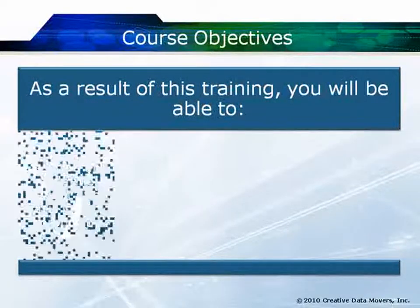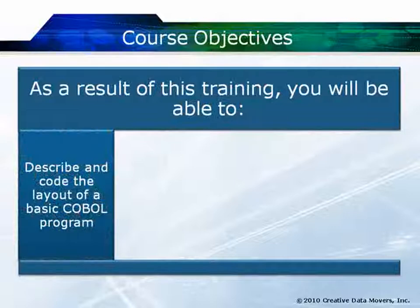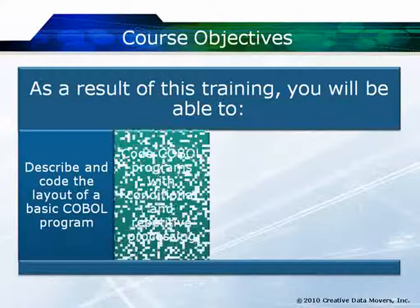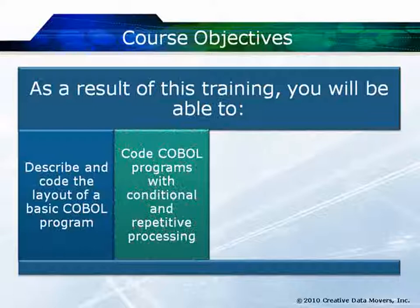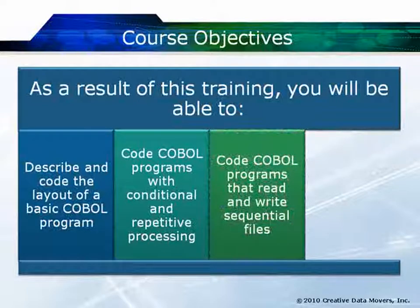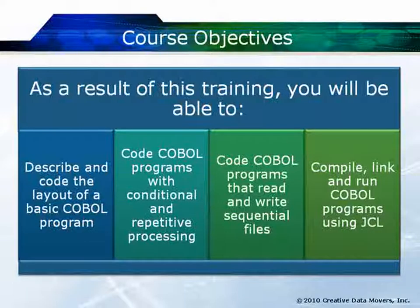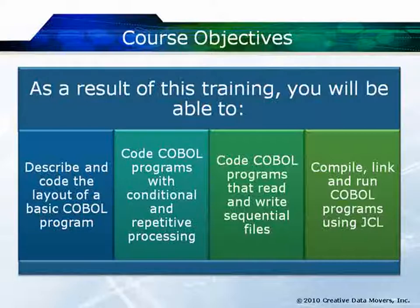Our objectives. As a result of this training, you will be able to describe and code the layout of a basic COBOL program — the four divisions and contents of all four of those divisions. You will be able to code COBOL programs that have conditional processing and repetitive processing: conditional processing using the IF statement, and repetitive processing using the PERFORM UNTIL with a number of variations. You will be able to code COBOL programs that read and write sequential files using the READ verb and the WRITE verb, using the FD in your file section of your data division. And of course, not only will you be able to code your programs and enter them onto a mainframe computer, you will also be able to compile and link them using JCL and then run those programs using a JCL member and the SUBMIT command. You will be able to correct your errors and then recompile, link, and run them again and check for basic processing output.